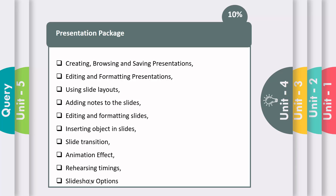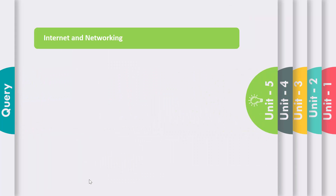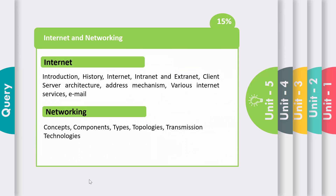This is the easiest unit in the subject. The last unit is Internet and Networking, and it has a weightage of 15%. This unit is divided into two parts — Internet and Networking. The internet part contains introduction, history of internet, what is internet, what is intranet, and what is extranet. It also includes client-server architecture, address mechanism — meaning IP address, MAC address, etc. — and various internet services and email.